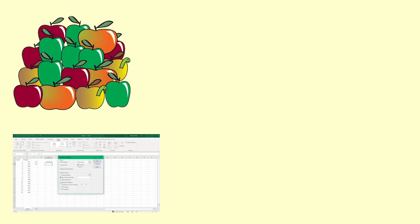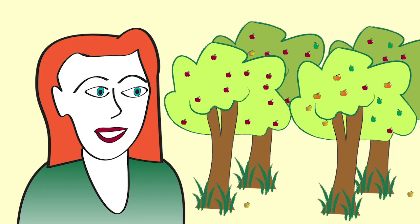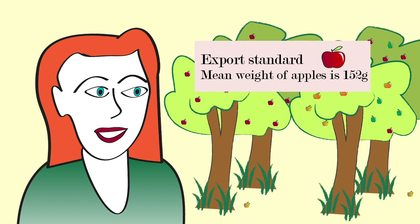We will use the same data we used in the video calculating a confidence interval for a mean, so that you can see where the numbers come from. In this case, the orchard owner is comparing the mean of her apples with the export standard of 152 grams per apple.